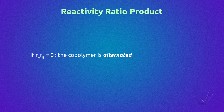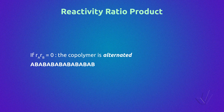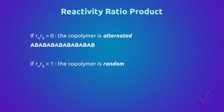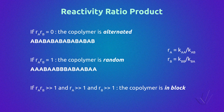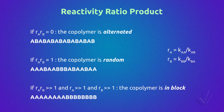The reactivity ratio product gives information about the type of copolymer. If the product is zero, the copolymer is alternating because the probability of homopolymerization is null. If the product is 1, there is the same probability of homopolymerization as copolymerization, so the copolymer should be random. Finally, if the product is much higher than 1 and both RA and RB are greater than 1, the copolymer tends to be a block copolymer because homopolymerization reactions have much higher probability than copolymerization.